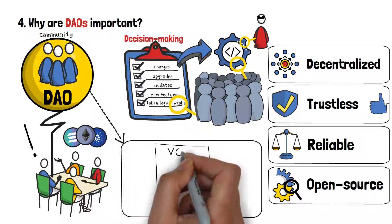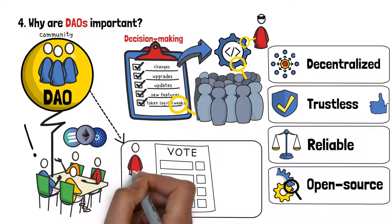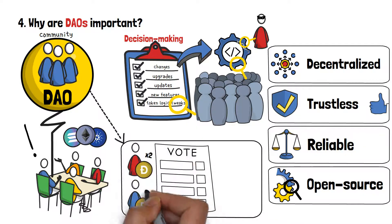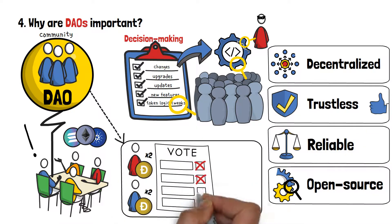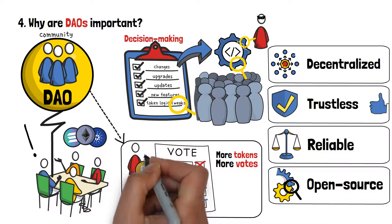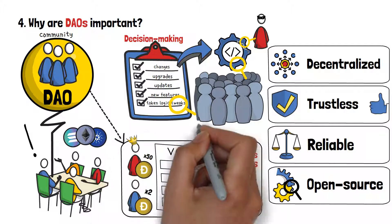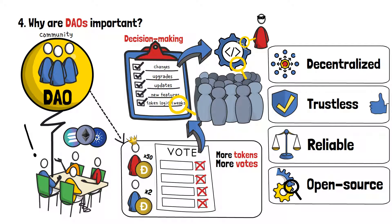Lastly, it's also worth mentioning that the token voting system is sometimes brought into question. DAO members vote on changes and upgrades of a project with their tokens, meaning the more tokens you have, the more votes you will be able to cast. What this might lead to is a big player coming in, buying up an exponential amount of tokens, and thus creating a sort of centralized environment, where their votes sway decisions the most. Naturally, many DAOs tend to have safety measures against something like this happening, but the concern is still out there.